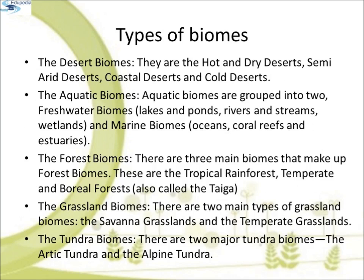Types of biomes: The desert biomes include the hot and dry desert, semi-arid desert, coastal deserts and cold deserts. The aquatic biomes are grouped into freshwater biomes — lakes and ponds, rivers and streams, and wetlands — and marine biomes such as oceans and coral reefs. The forest biomes include tropical rainforest, temperate rainforest, and boreal forests also called taiga. The grassland biomes are the savanna grasslands and the temperate grasslands. The tundra biomes include the arctic tundra and the alpine tundra.